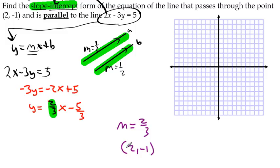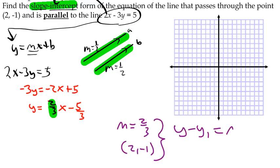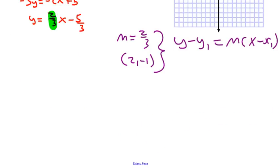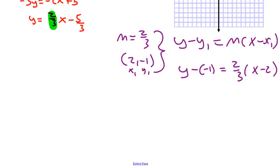This line is going to be parallel to the original because they have the same slope. And what formula are we going to use? The point-slope formula, because we have a point and a slope: y - y₁ = m(x - x₁). So we plug in: y - (-1) = (2/3)(x - 2). This is my x₁ = 2 and y₁ = -1.